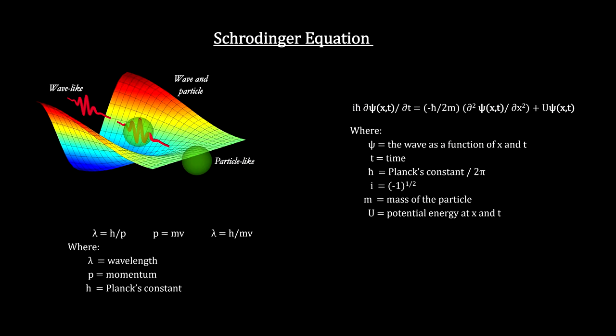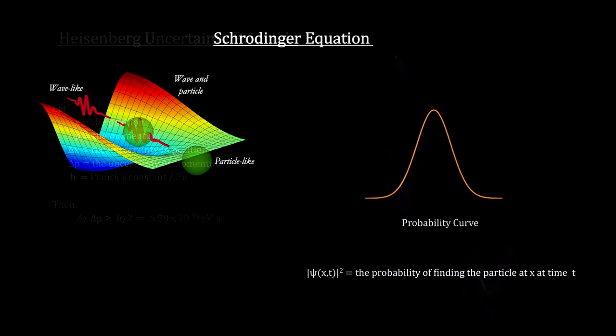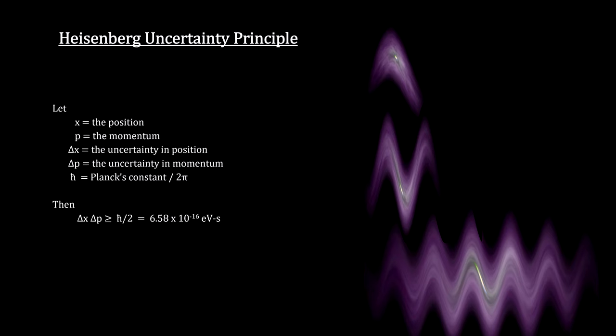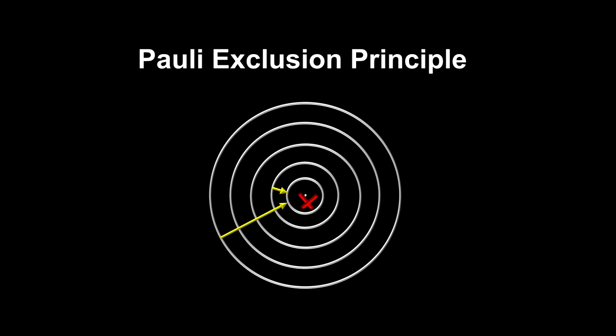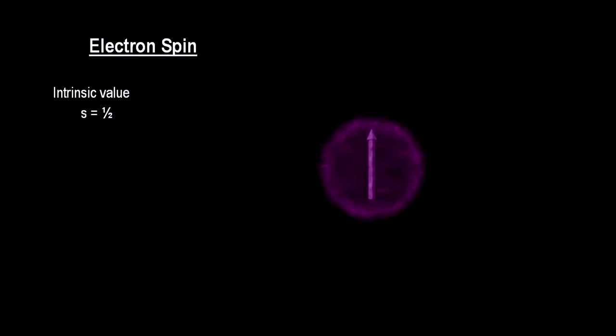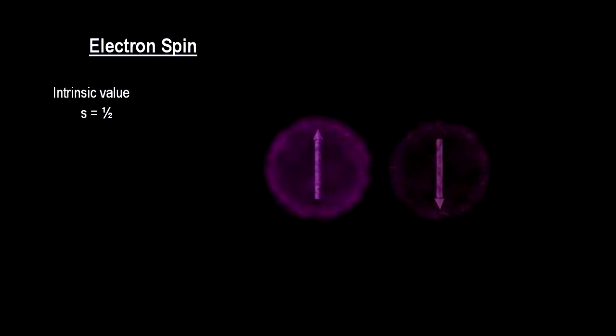In our second chapter on the atom, we covered Schrödinger's equation with its probability wave, Heisenberg's uncertainty principle, and Pauli's exclusion principle with electron spin. These constitute the base physics for understanding superpositions and entanglement.